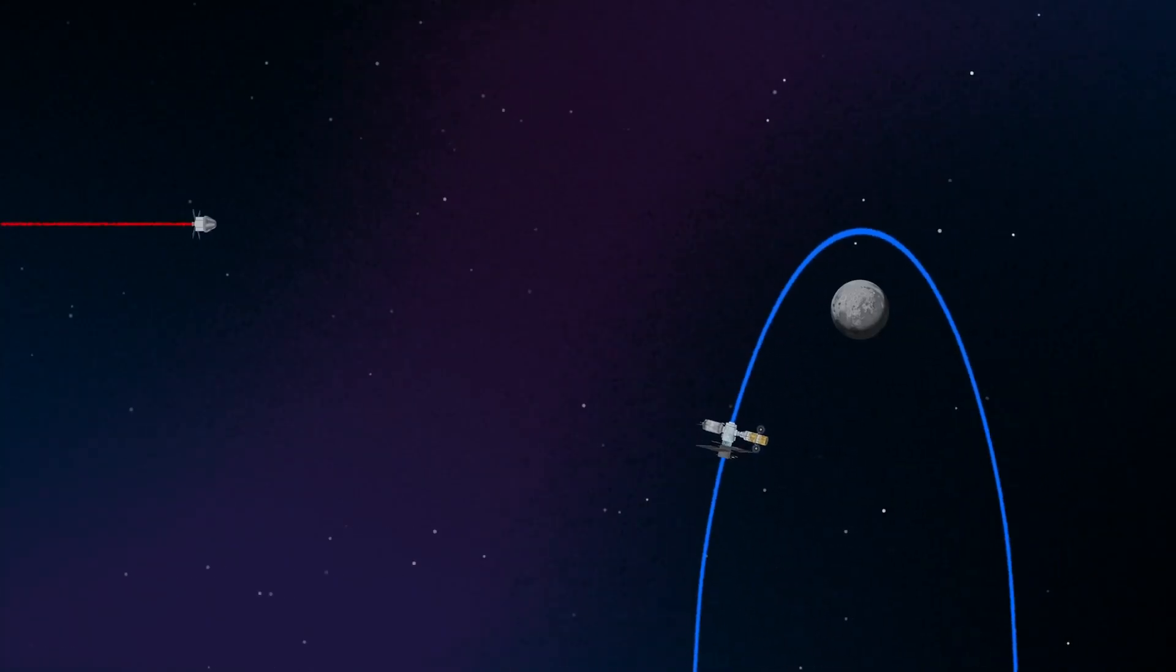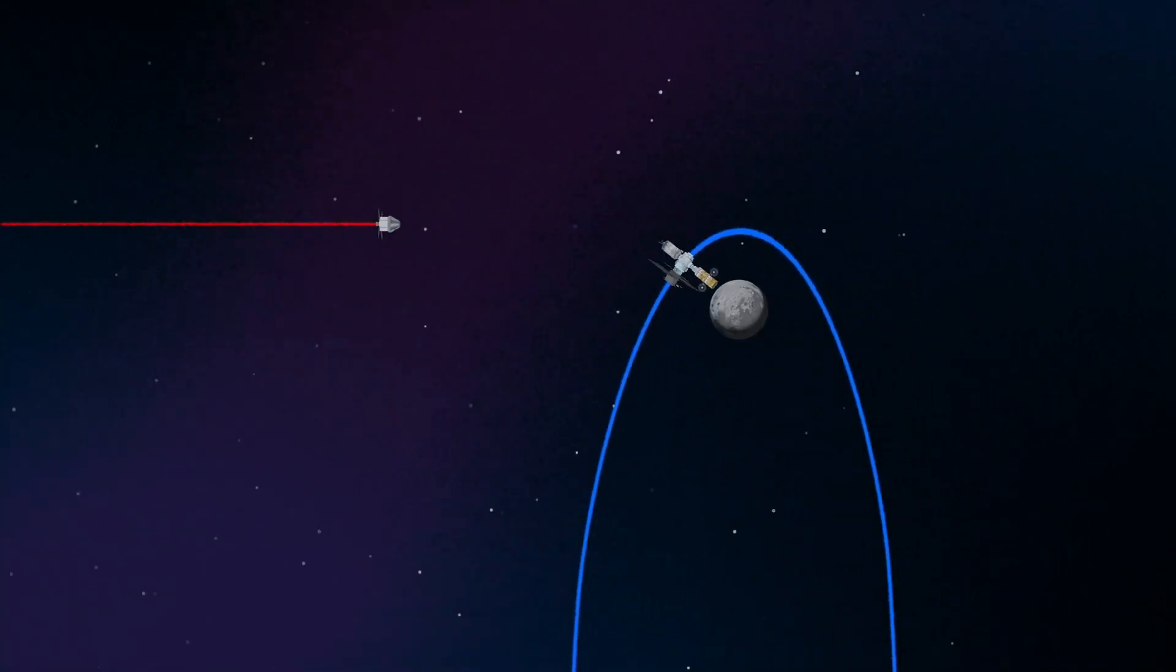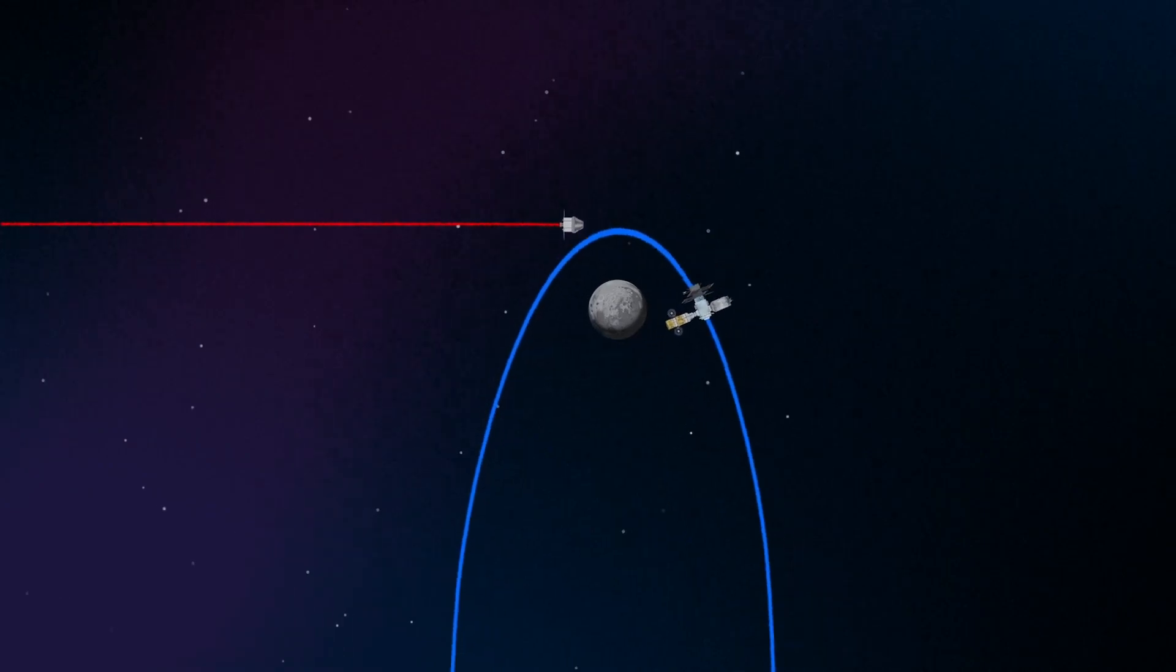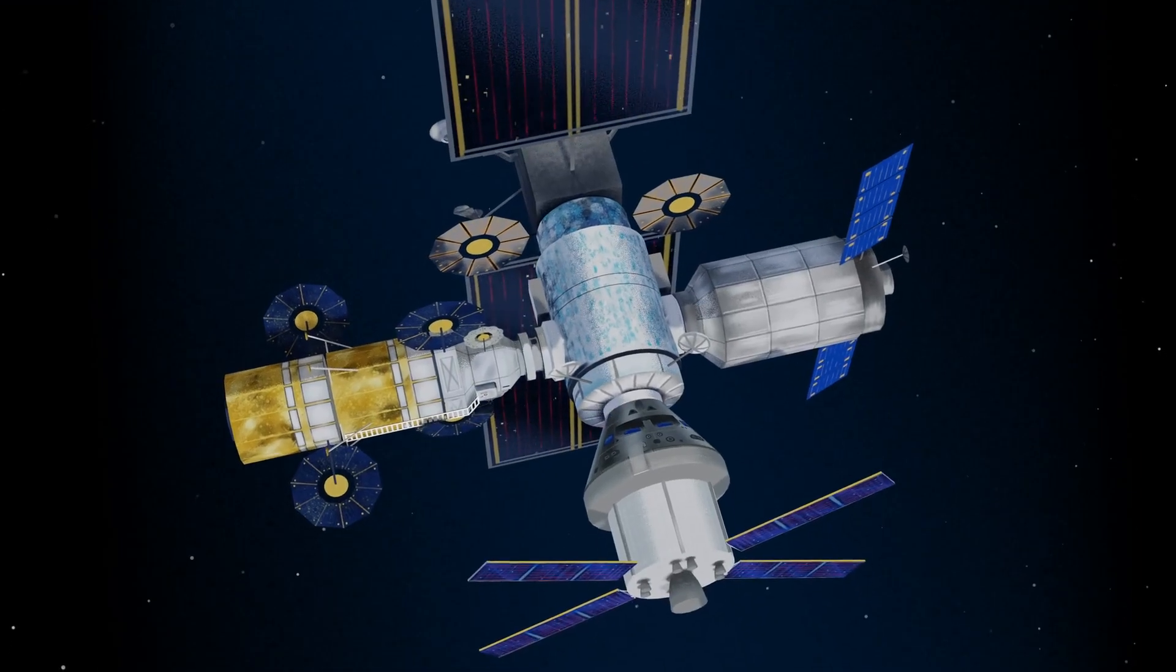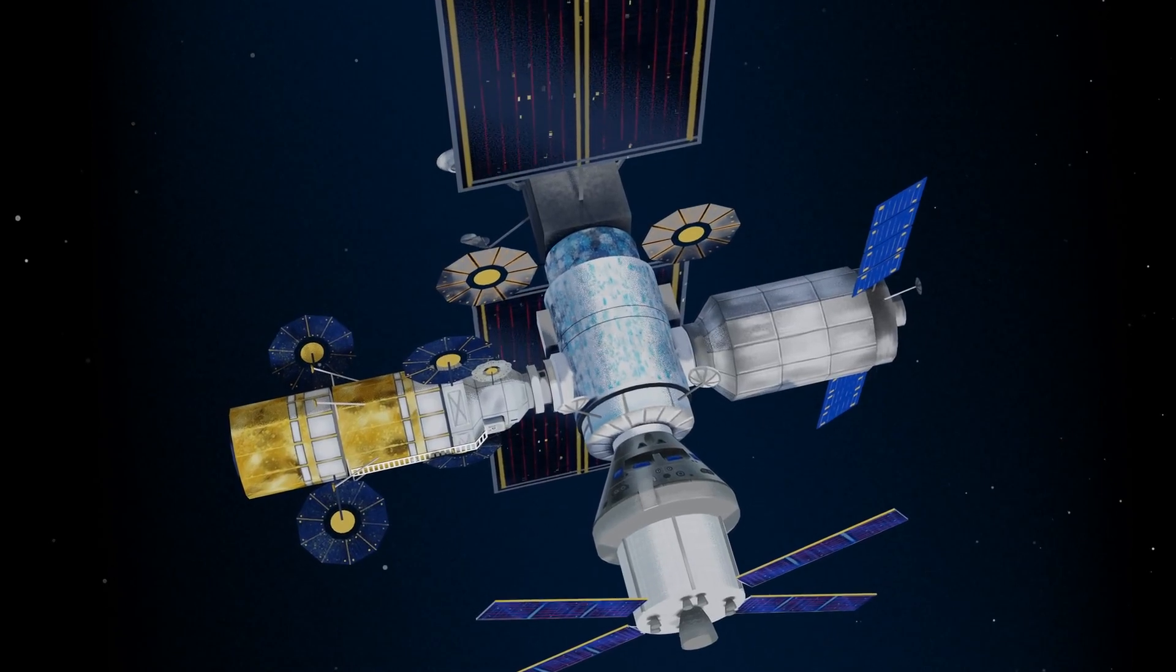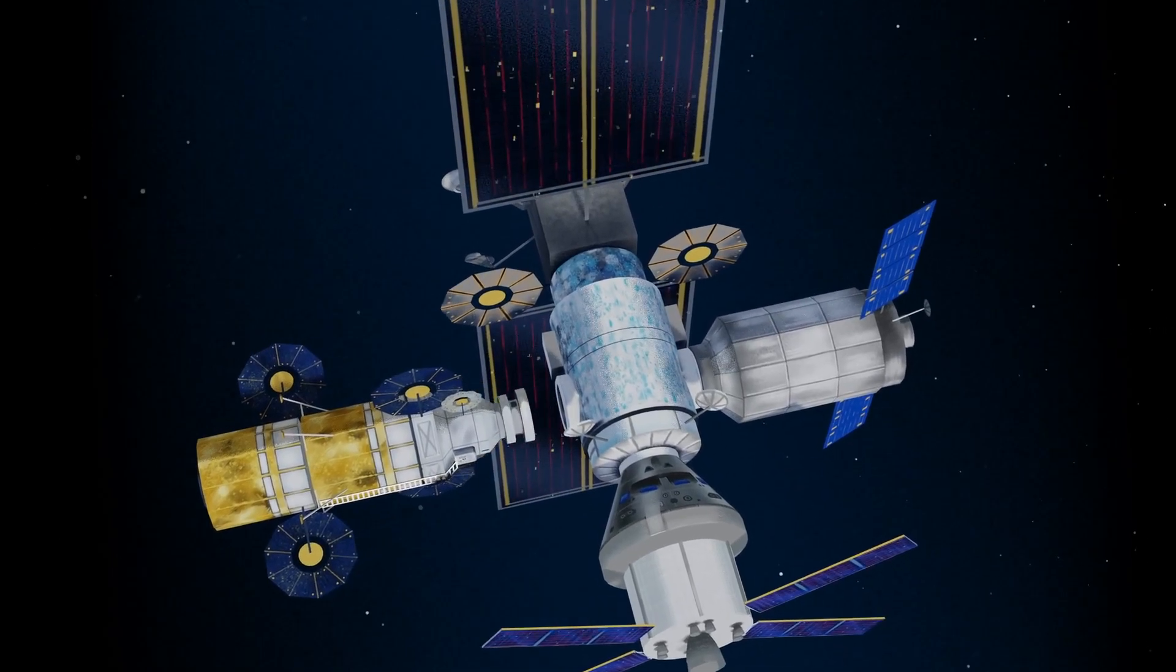Returning to our crew as they approach Gateway, the Orion must match the elliptical orbit of the station in order to successfully dock. Once on board, pre-selected crew members transfer to the lunar lander, while those assigned to Gateway remain on station.